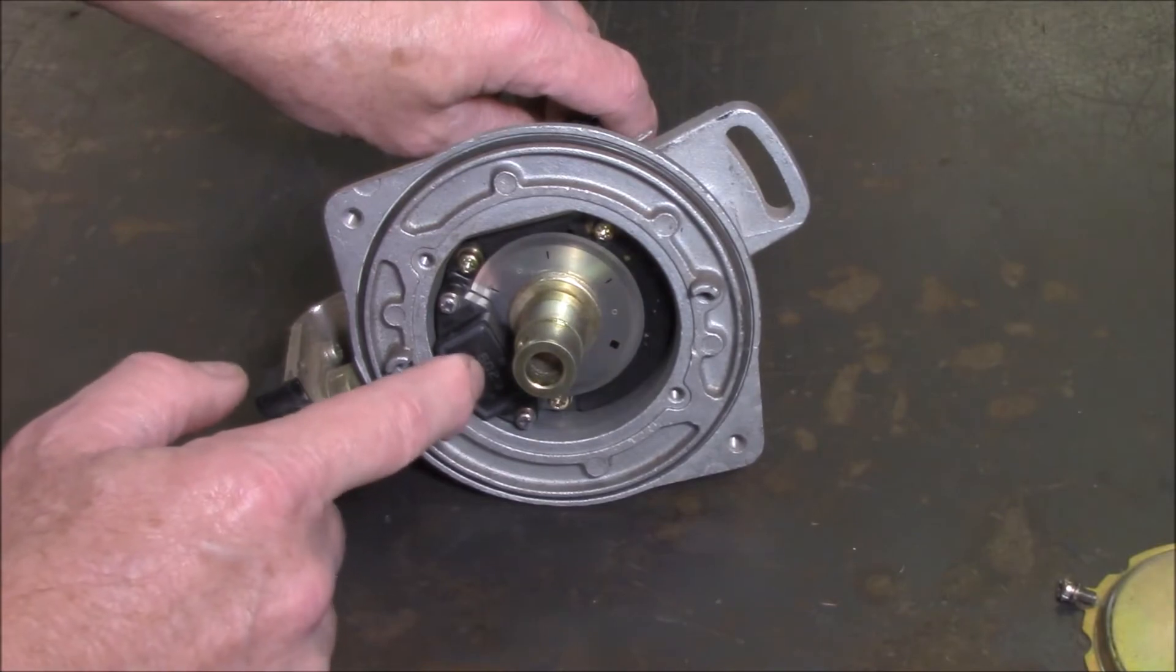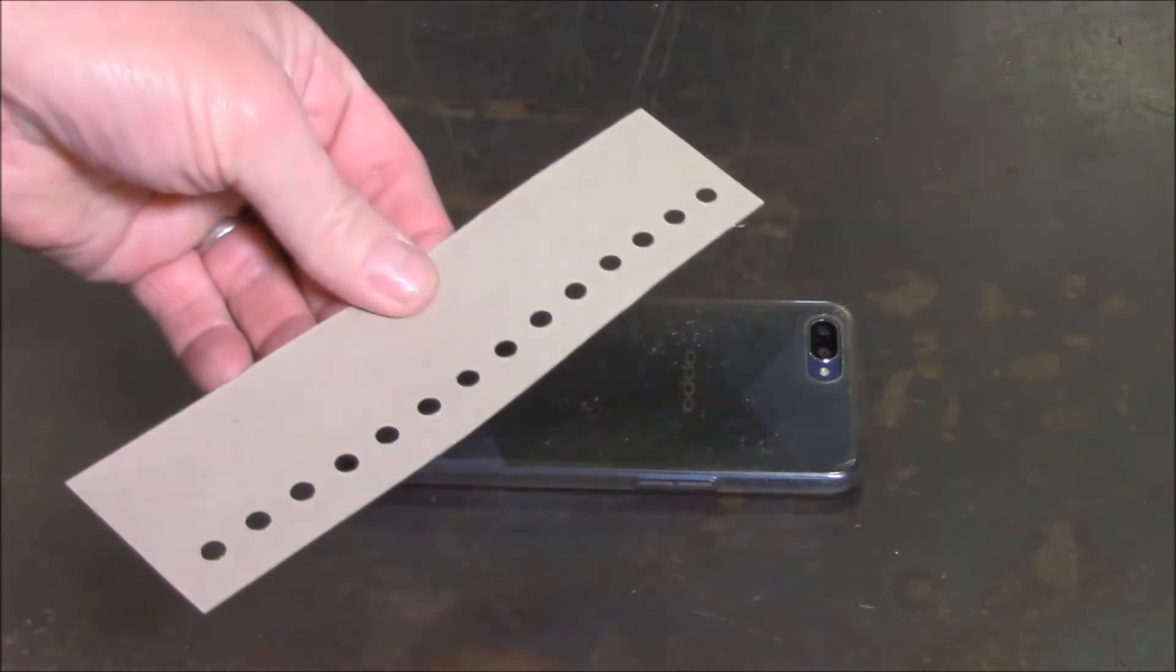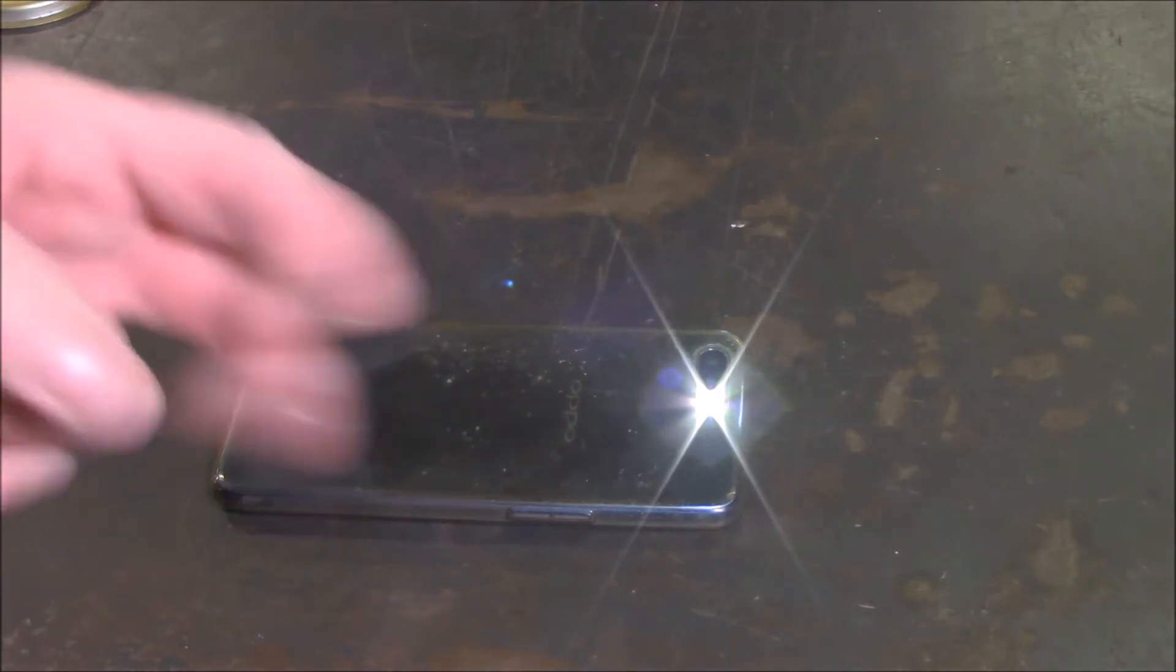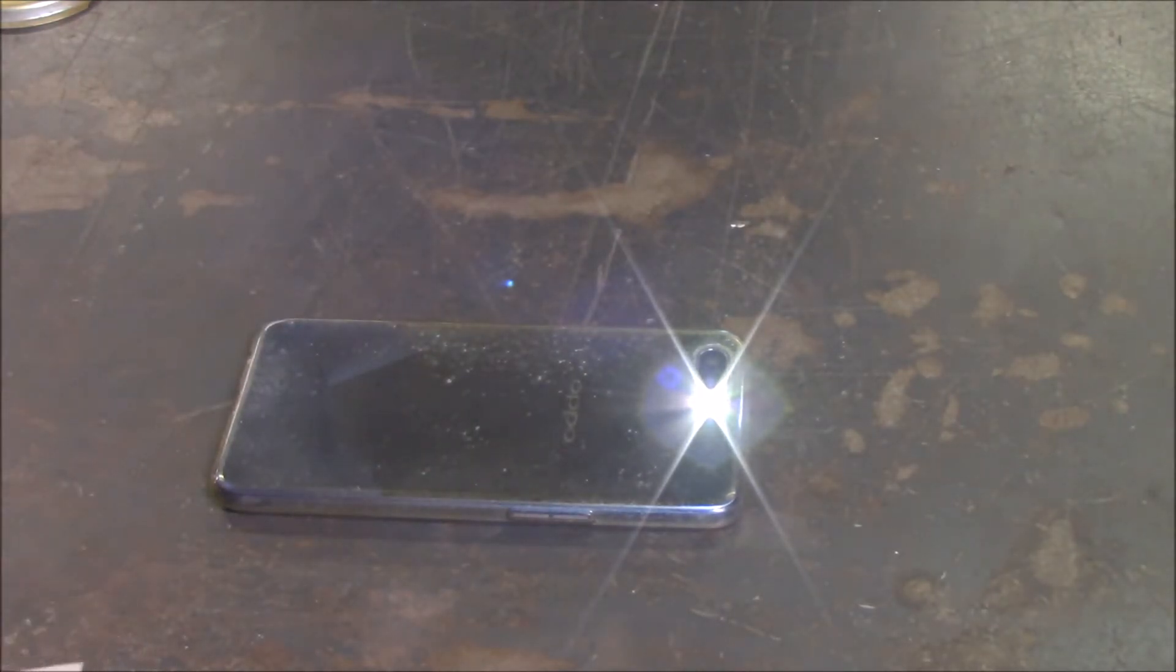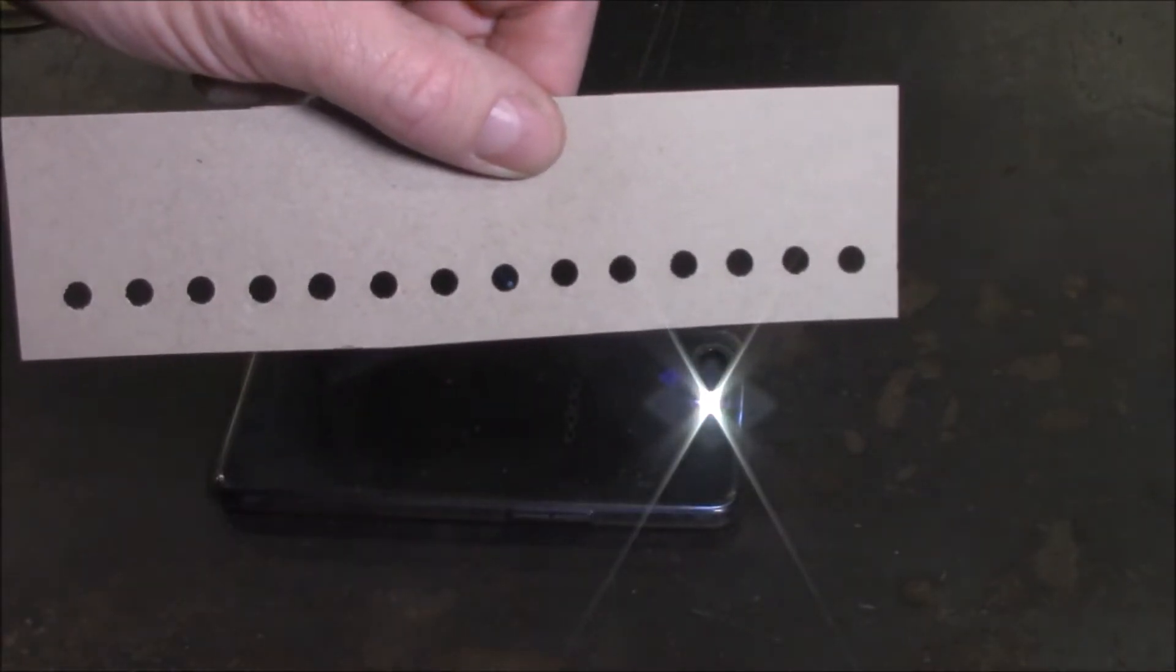So how does this little sensor work? To give you an idea of how it operates I'm going to use my phone and a piece of cardboard. The optical sensor has two LEDs on one side of the rotating disc. The rotating disc is kind of like this piece of cardboard that has holes or slots cut into it.